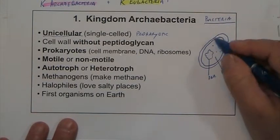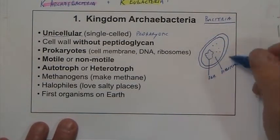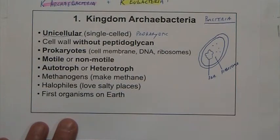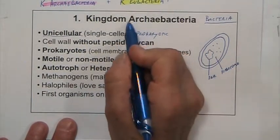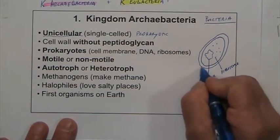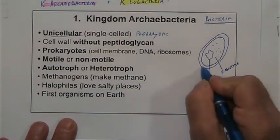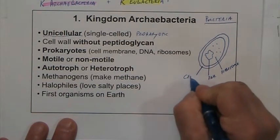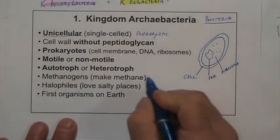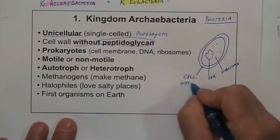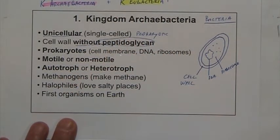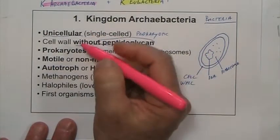Everything else is dissolved in the cytoplasm. One significant aspect of the Archaeobacteria is that their cell wall does not have the compound called peptidoglycan. That is the big difference between the two groups of bacteria.